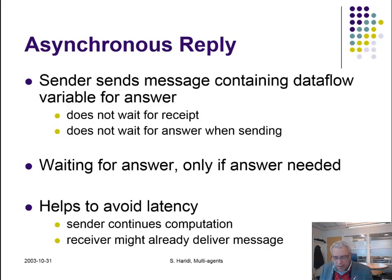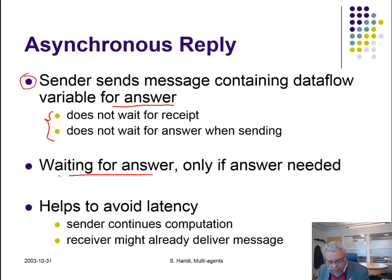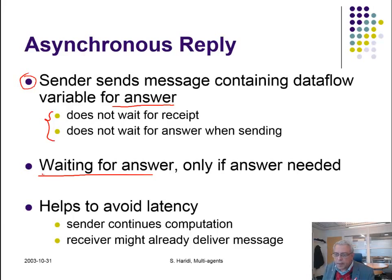Asynchronous reply: messages can also contain a data flow variable as an answer back. So a sender sends messages containing a data flow variable for an answer, and doesn't need to wait — they can just continue computation and use that data flow variable when they need it. The data flow variable creates dependency in the computation. A sender can always continue until it needs to use the data flow variable; if it is not yet bound, then it will wait for the result. This type of behavior can help avoid latency.